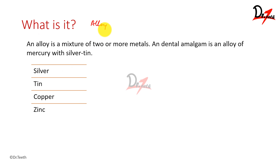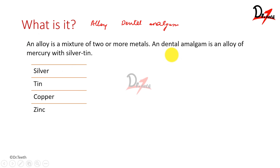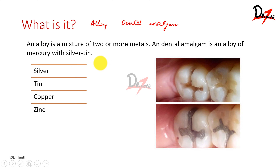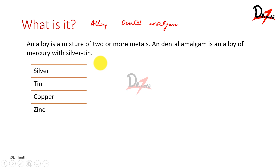Let's start by understanding two terms: alloy and dental amalgam. An alloy is a mixture of two or more metals. Dental amalgam is a type of alloy — a specific alloy where we have mercury with silver and tin. So now we know what an alloy is and what dental amalgam is.